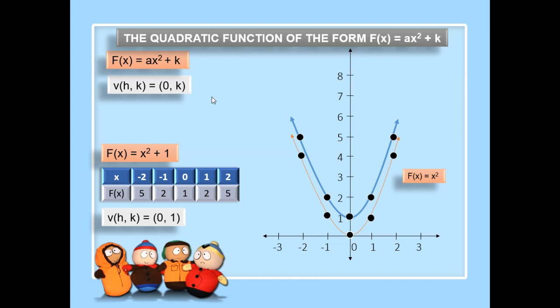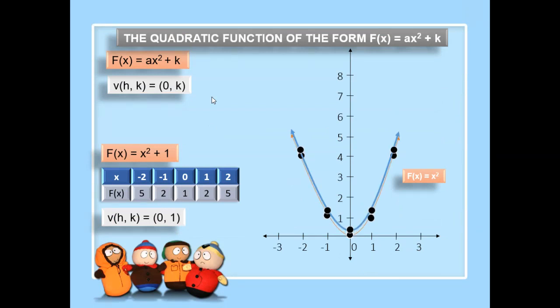The graph of x squared plus 1 seems identical to the graph of a x squared. The blue graph appears identical to the red graph. They are really identical, only that the graph of x squared plus 1, with the value of k equal to 1, is translated 1 unit upward.